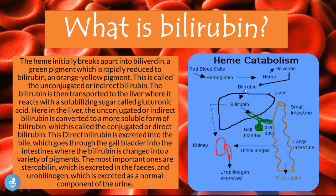Because bilirubin in its indirect form before it enters the liver is the insoluble form, the body will not be able to dispose of it in that unconjugated form. So it has to go to the liver to be conjugated so that it becomes soluble and will be easier to dispose of.